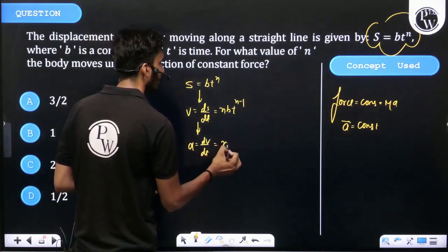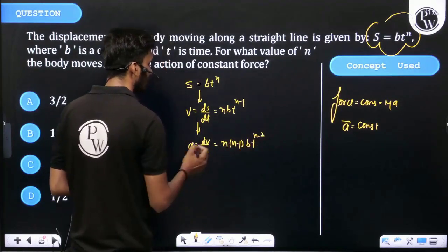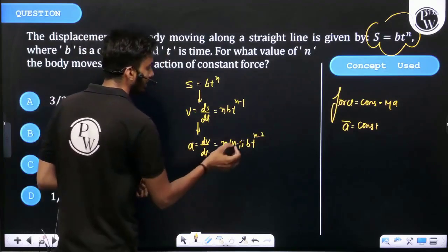That is n(n-1)bt^(n-2), and it's constant. That means it doesn't depend upon time.